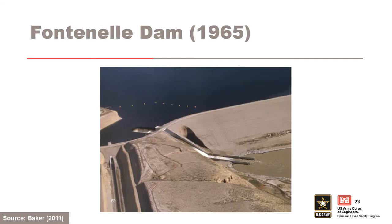The US Bureau of Reclamation's Fontanelle Dam in Wyoming nearly breached by sloughing, but the breach process occurred slowly enough that the reservoir water surface was able to be lowered over the span of several days and arrest the breach. A sinkhole also developed on the crest and there may have been piping along the soil-rock interface as well.